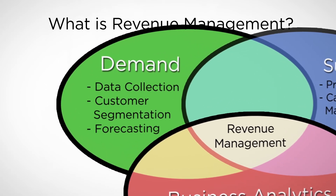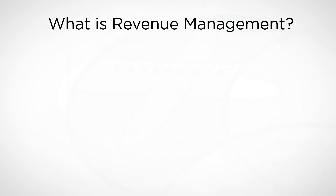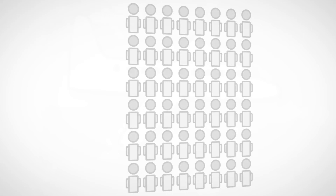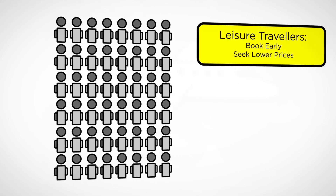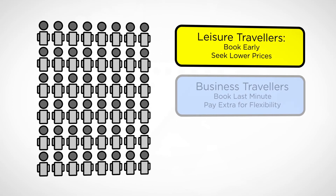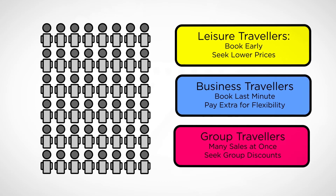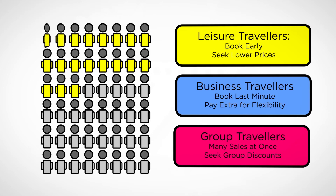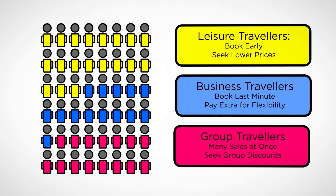Looking at the first component — demand and forecasting — a very important thing to keep in mind is that today, in this big data era, we can no longer look at our consumers as a homogeneous population of buyers, but rather as a collection of groups with individual needs, individual preferences, individual price elasticities, and individual purchasing behavior. A key aspect of revenue management is really to pursue this customer segmentation: how can we break our population of consumers into classes and carefully design products that match their needs?